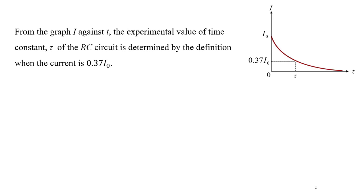From the graph of I against T, the experimental value of time constant tau of the RC circuit is determined by the definition when the current is 0.37 I not.